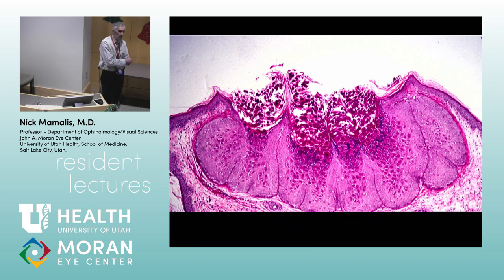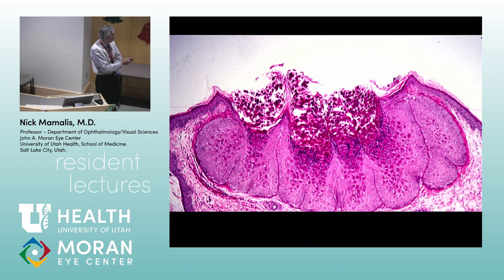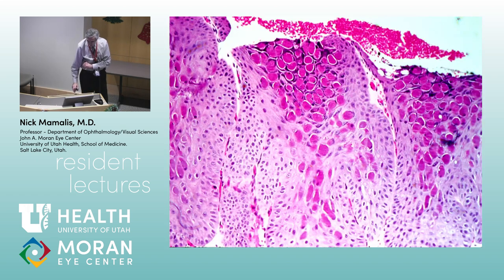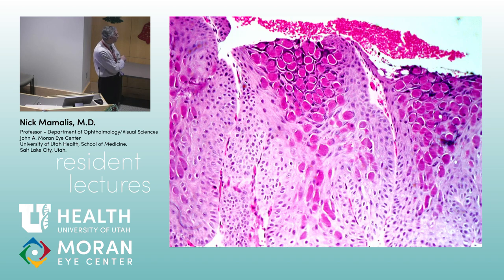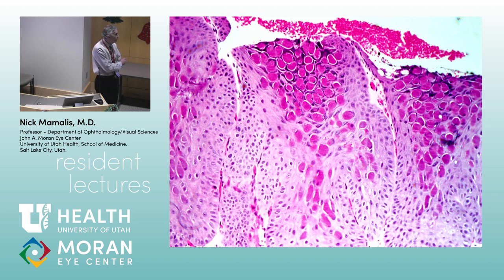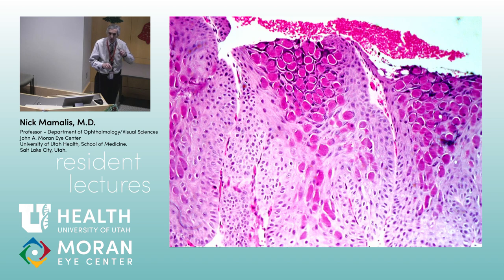Nothing looks like this pathologically either. The epithelium is very thickened and elevated at the edges, umbilicated in the center. At higher power you see molluscum bodies — the virus takes over the cell, literally pushes the nucleus to the side, and eventually all you're left with is a sack full of virus. These molluscum bodies are eosinophilic, full of virus, and they spill out on top — which is why these come in clusters.